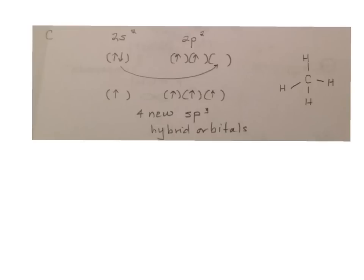If we go to carbon, it looks like it can only form two bonds. But again, it's going to promote an electron. So now it's got four unpaired electrons. You might be catching the pattern here. One's in the s, three are in the p. So it makes four new sp3 hybrid orbitals. And that is why carbon forms four bonds.